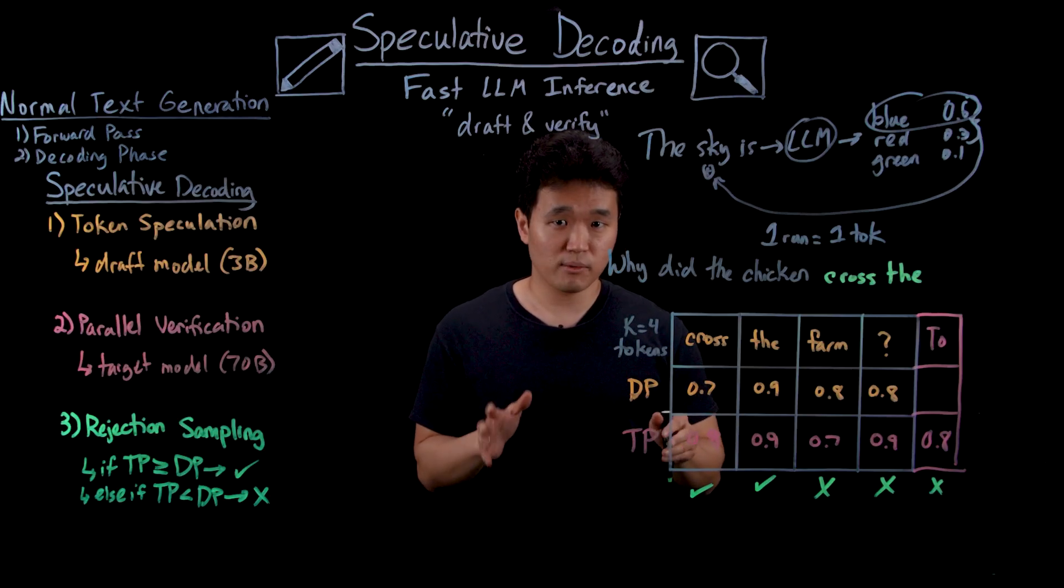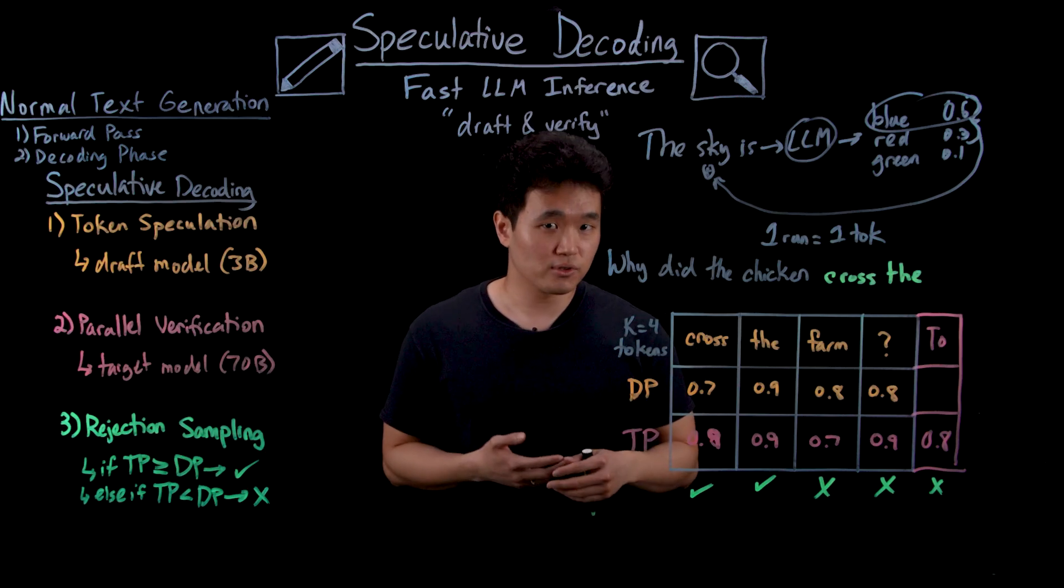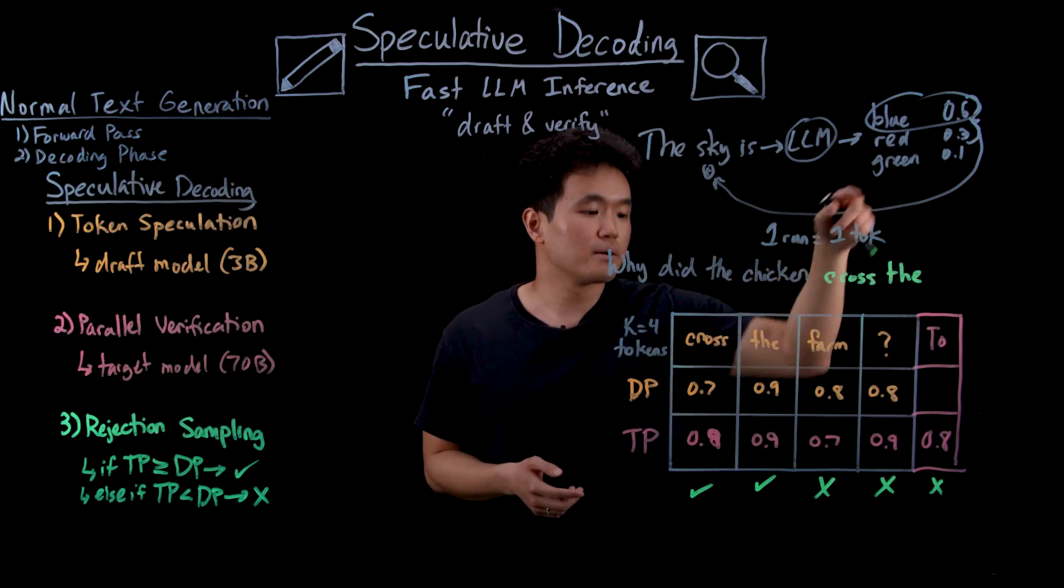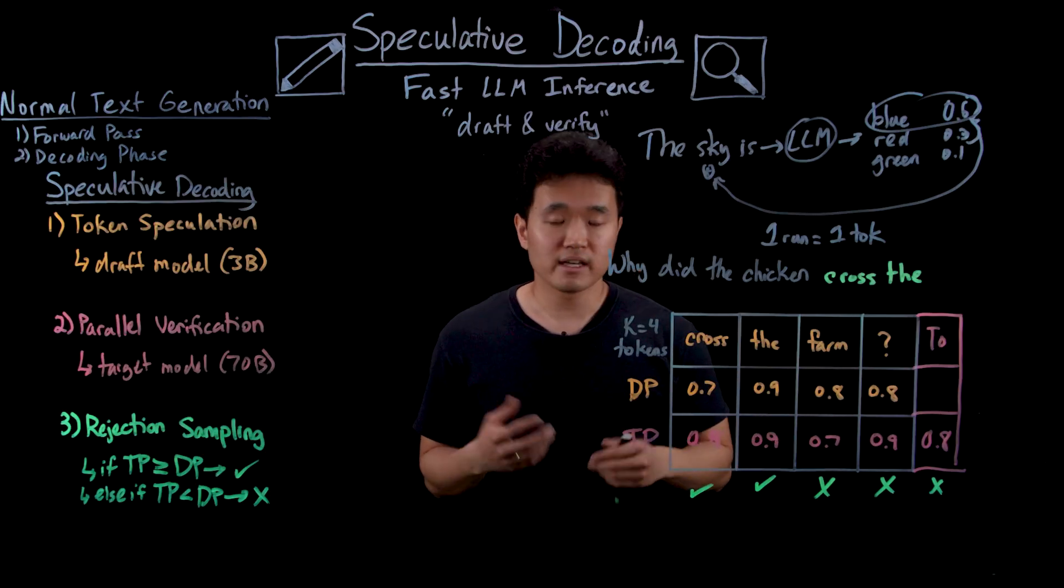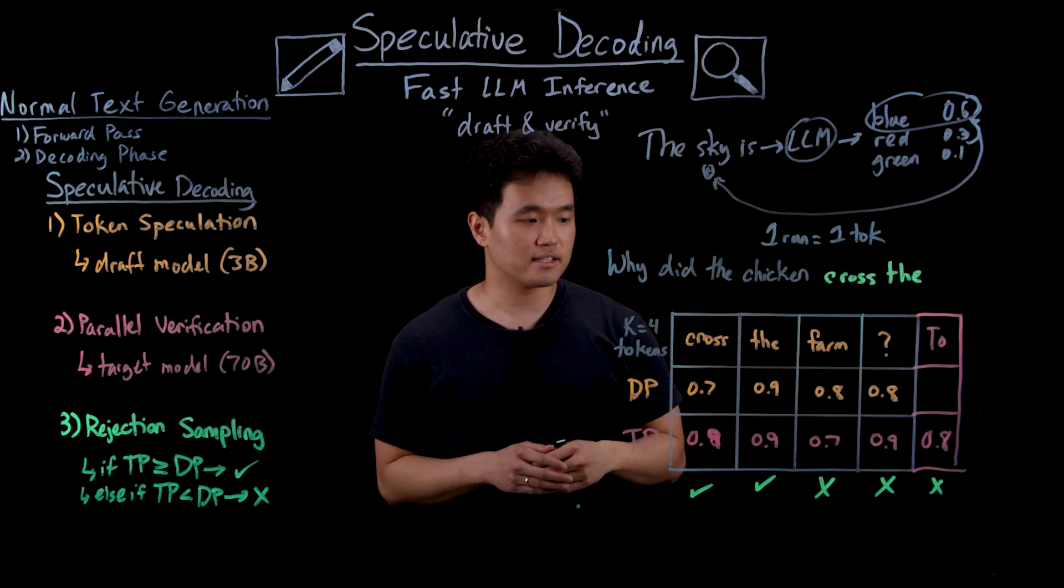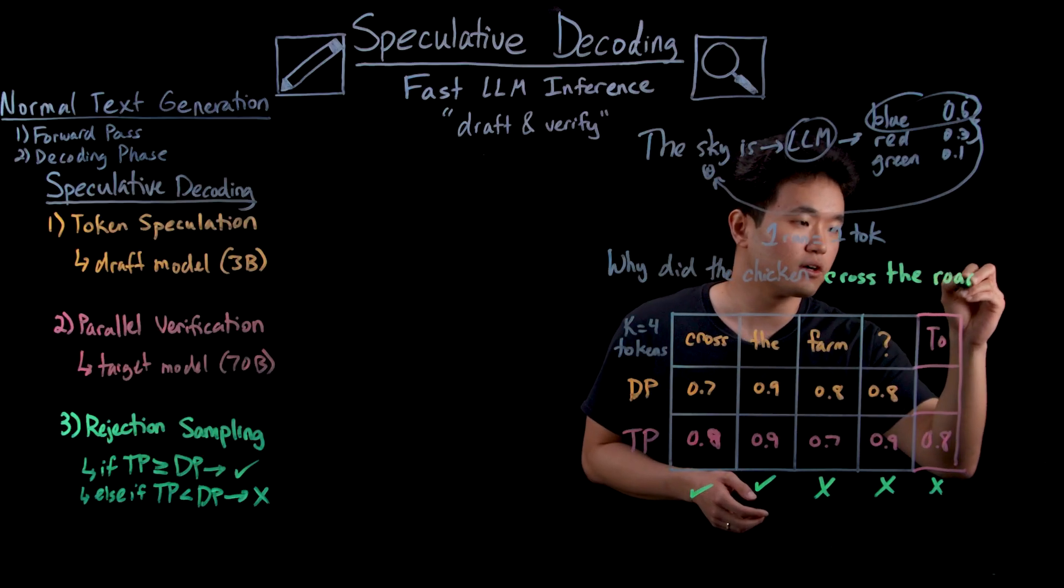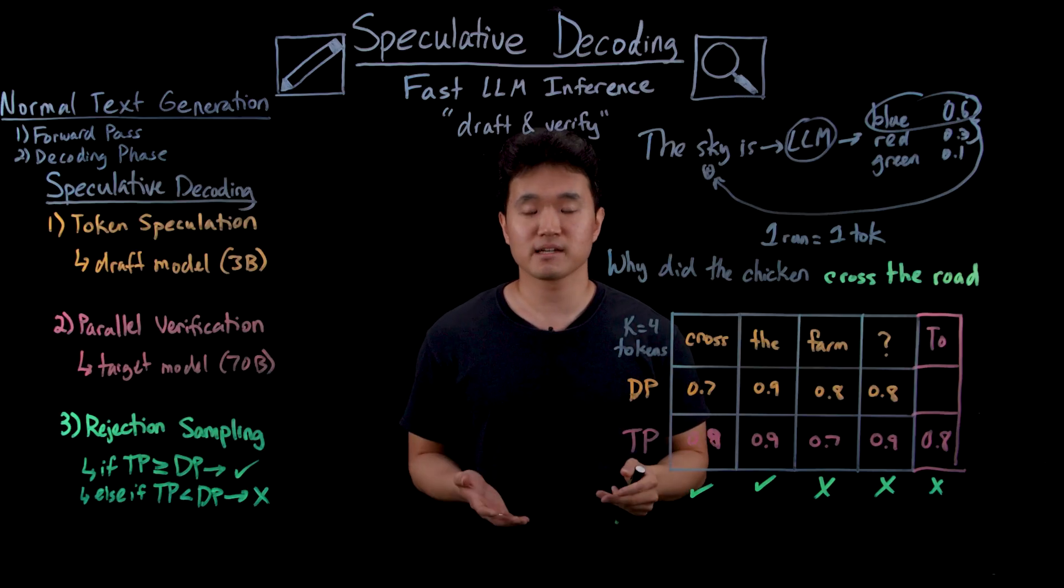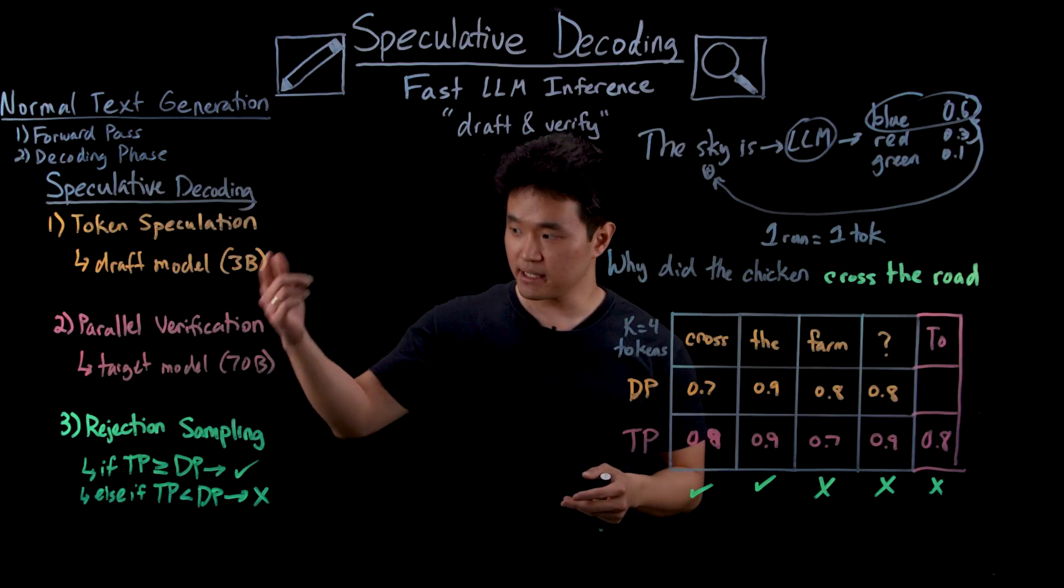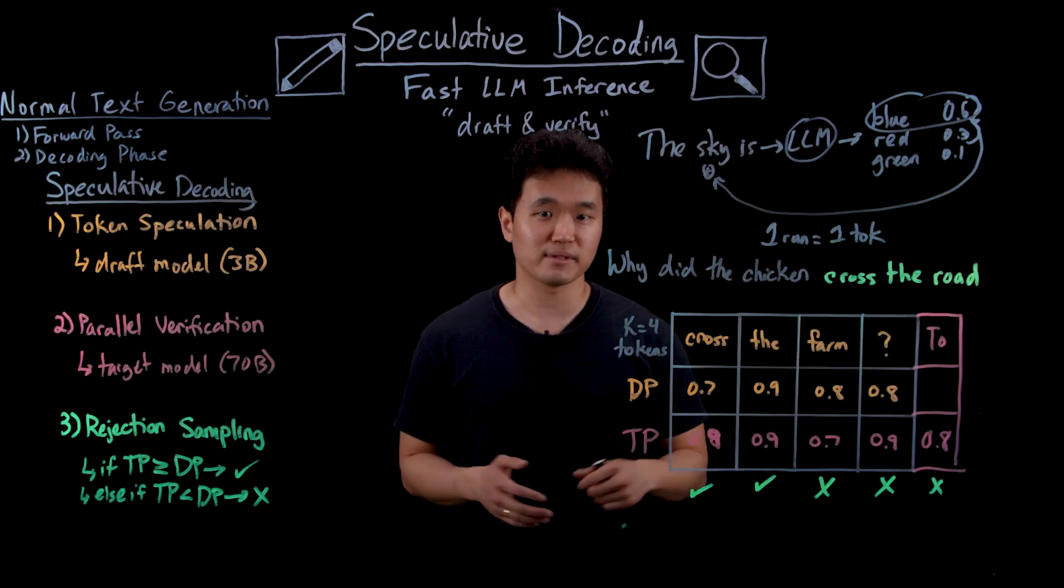So now to get back on track, what we can do is use the target model to re-sample the next best option from the underlying distribution of this rejected token. So in our example, say that the target model corrects the word farm to the word road, and it's at this point that we have officially completed one round, and we can repeat this three-step process again and again until our joke or our output is complete.